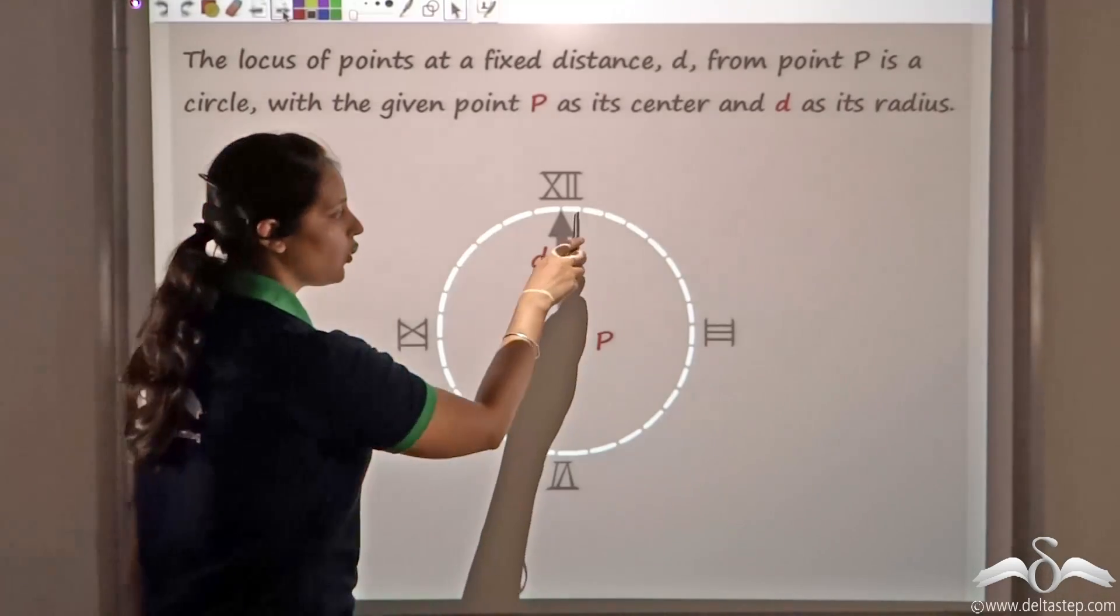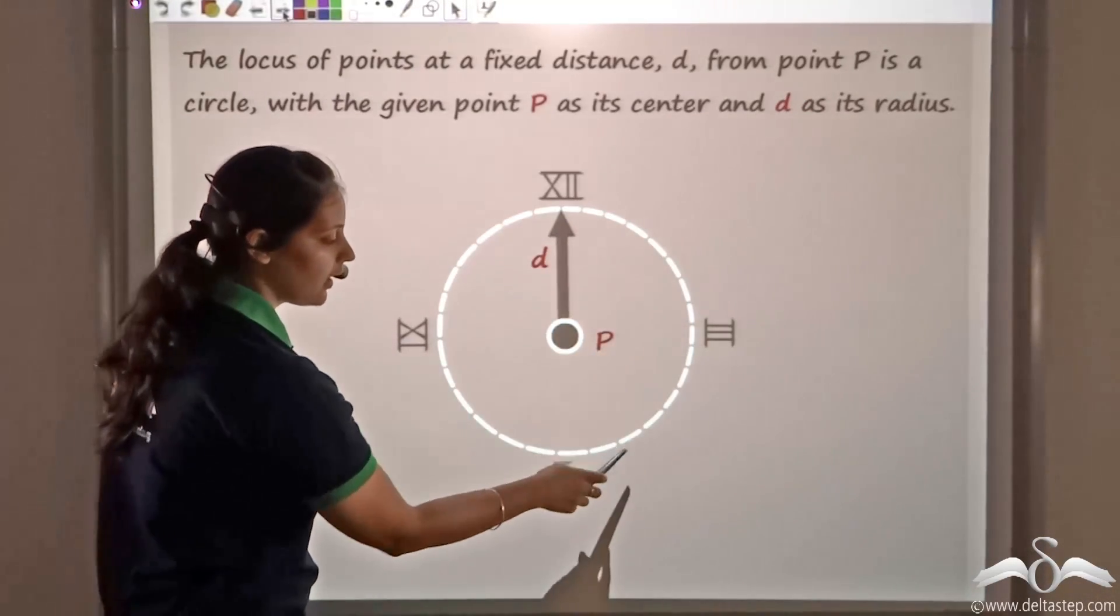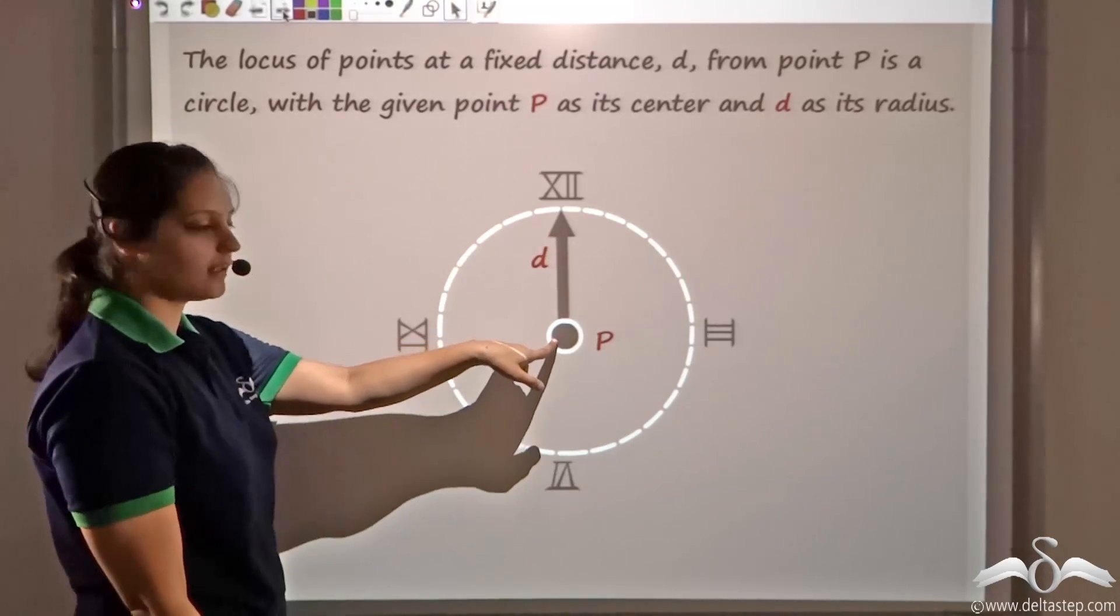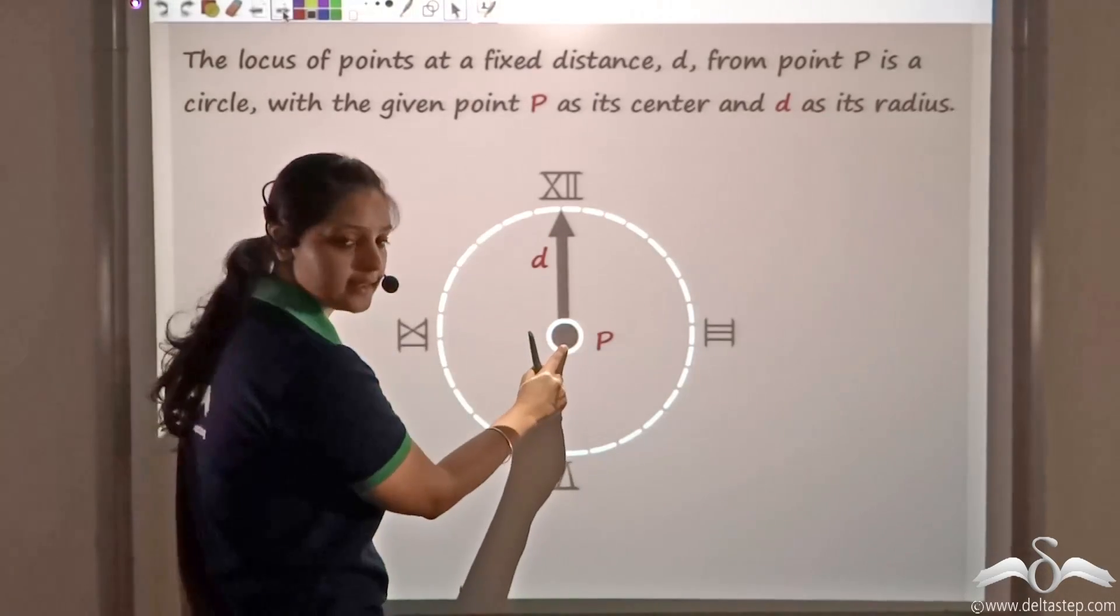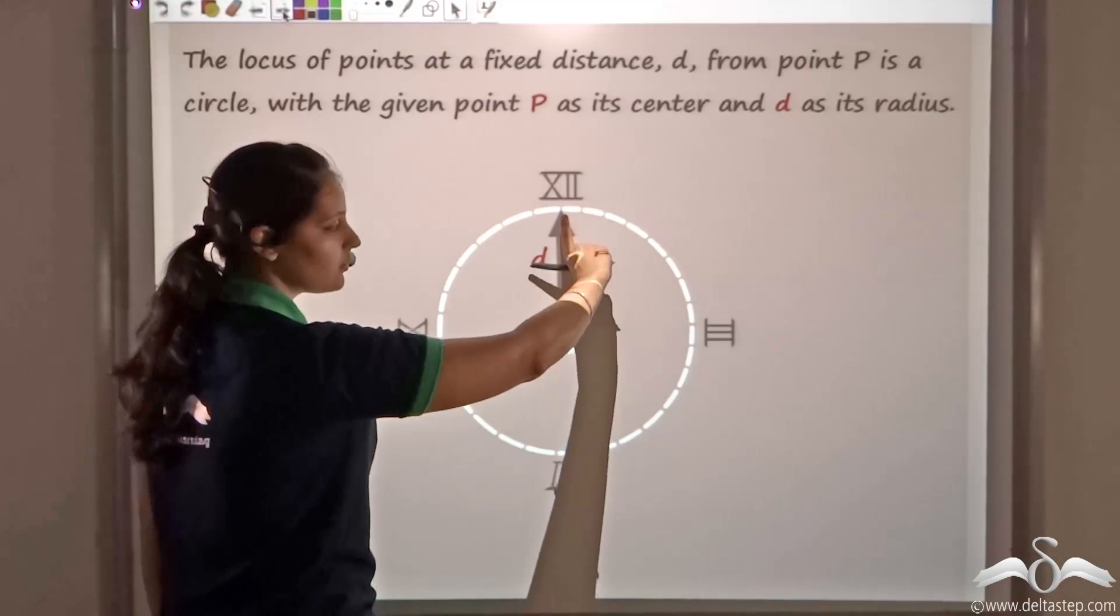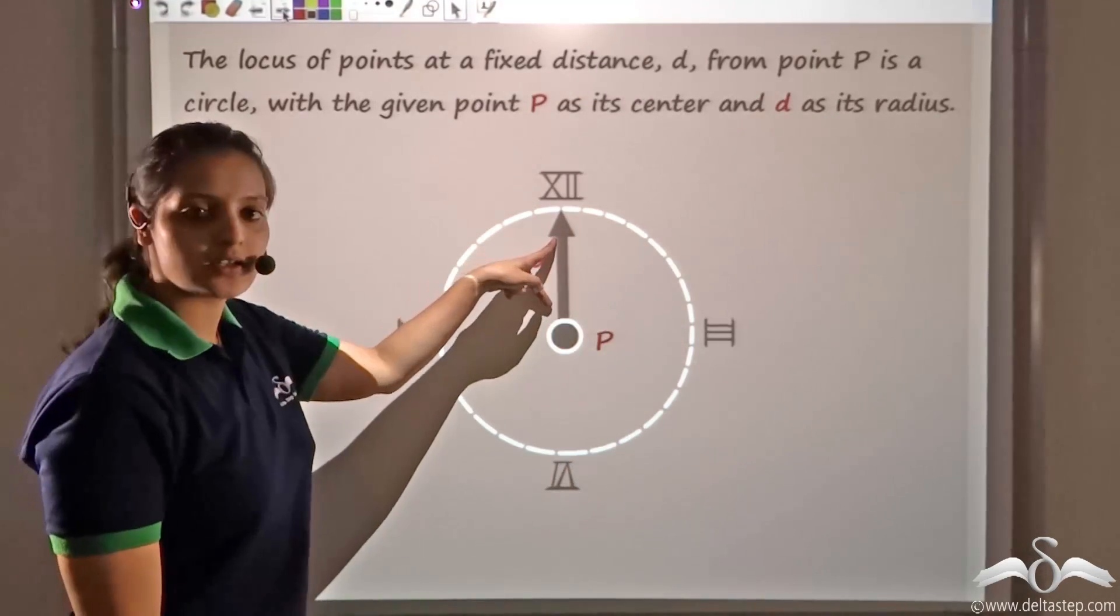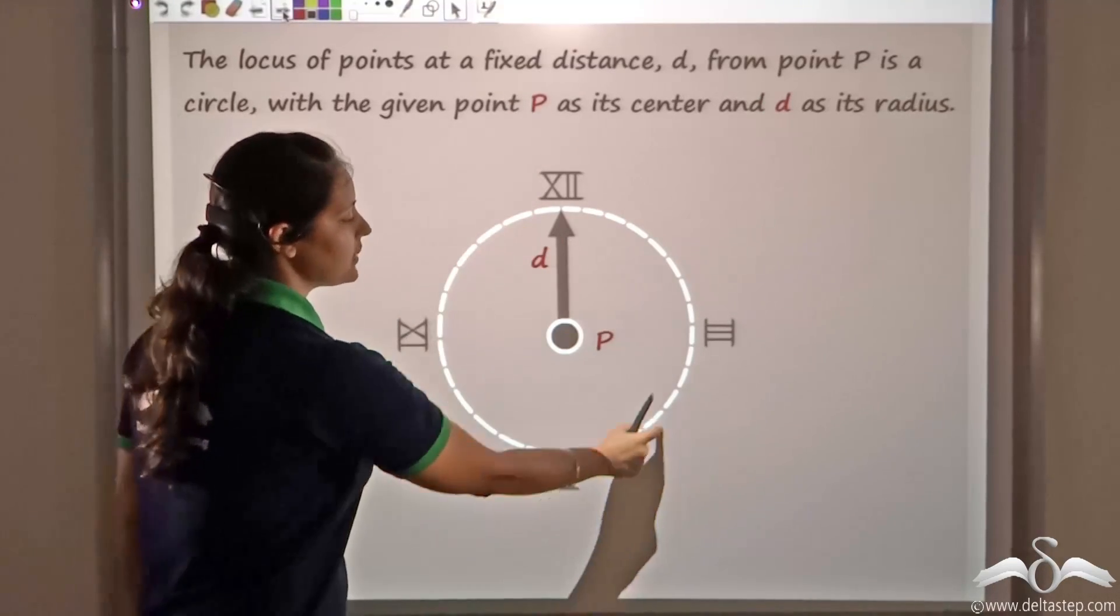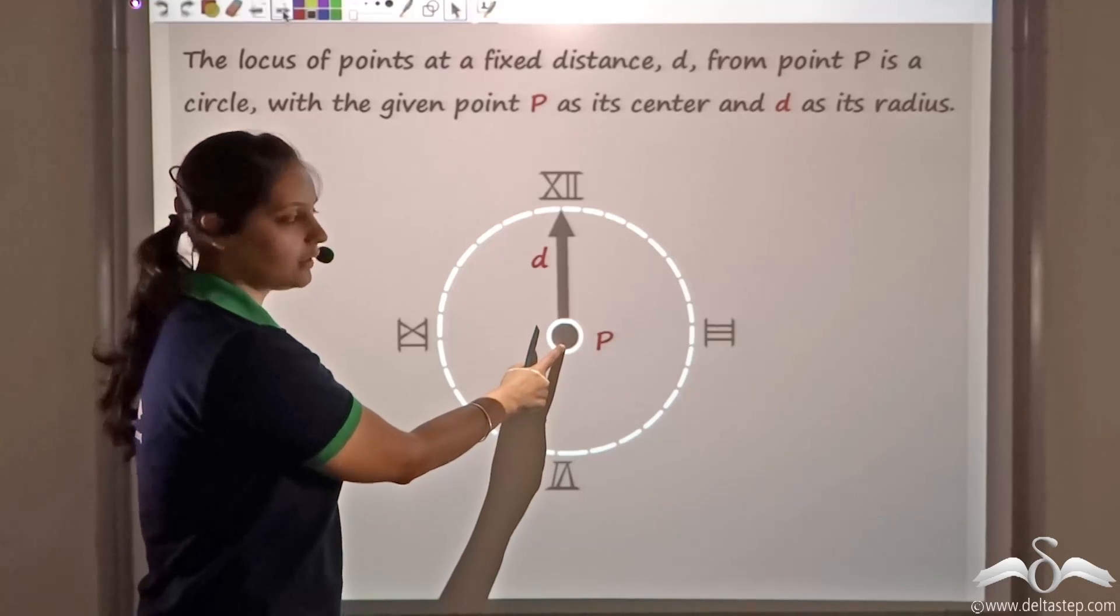What we have observed is that all these points are at a fixed distance D away from the fixed end. So there is a point P, let us say, and all these points are a distance D away because the length of the minute hand is not changing.